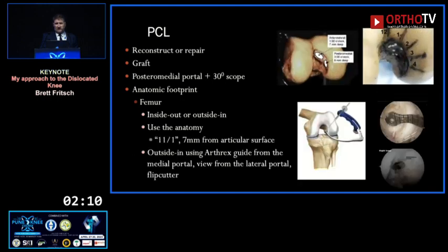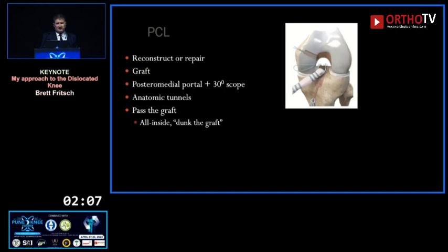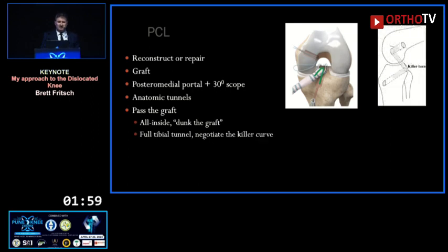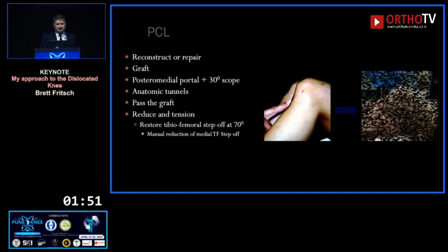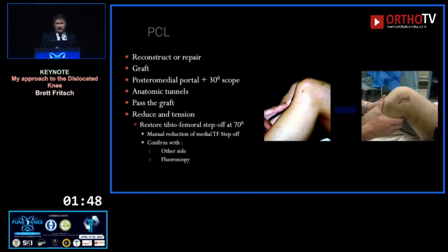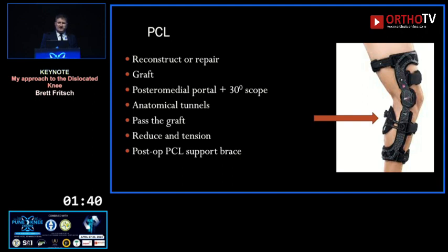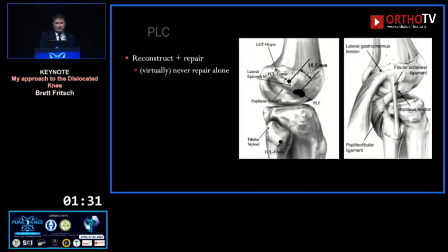I drill the femur inside-out or outside-in, usually using a flip cutter. For passing the graft, I pass through the medial portal — you run it down into the tibial tunnel and bring it back up into the femur. If passing up the killer curve through the tunnel, I pass a probe through the back so I can lever it around the corner, dock it in the socket, restore the step-off, and confirm it against the other limb, which I always leave undraped. PCL jack braces, where you can apply an anterior draw, make a big difference for both PCLs and posterolateral corners.